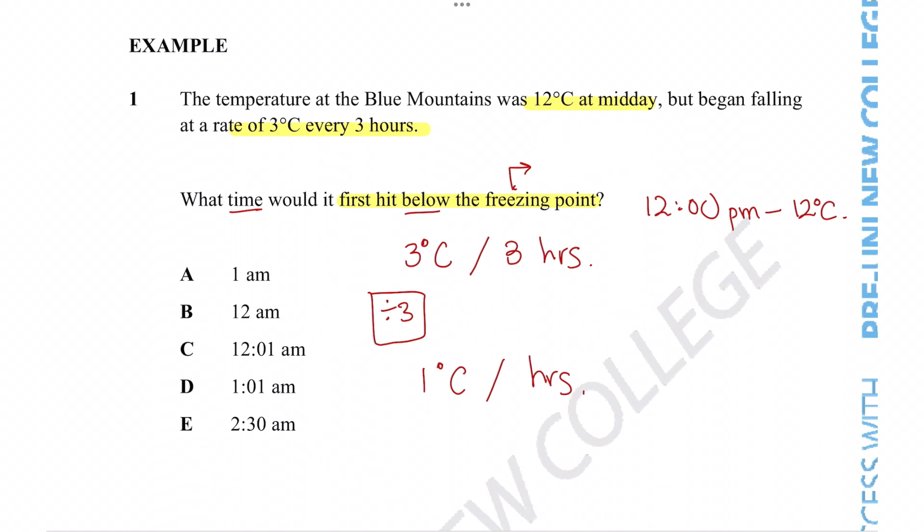This requires us to understand that water freezes at zero degrees Celsius. So the temperature change has to be the time when the temperature reaches zero degrees. The amount of temperature that has changed for this to happen is clearly a change of 12 degrees Celsius.